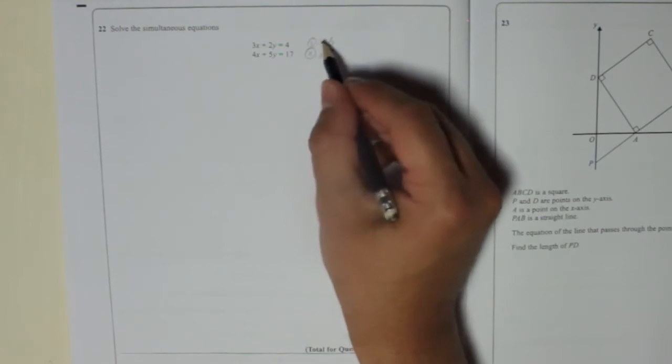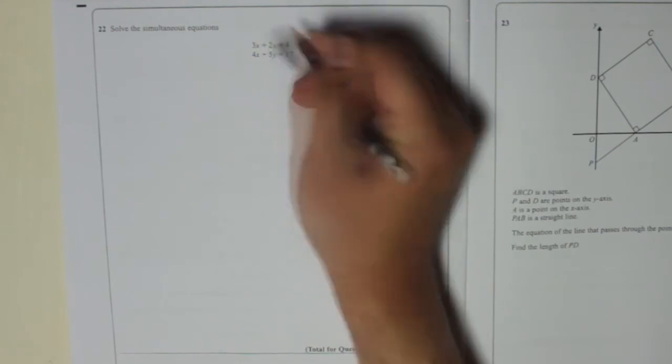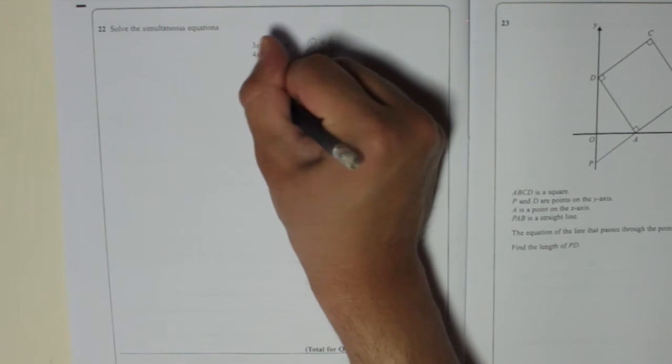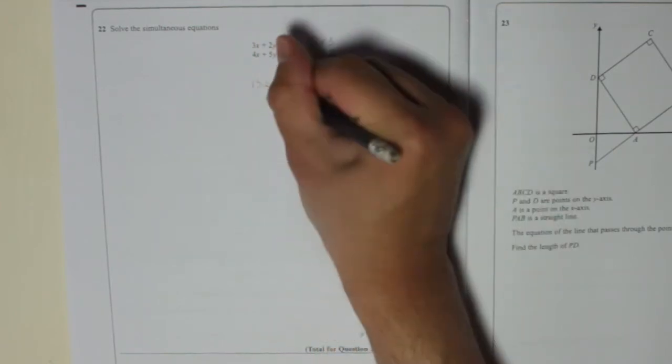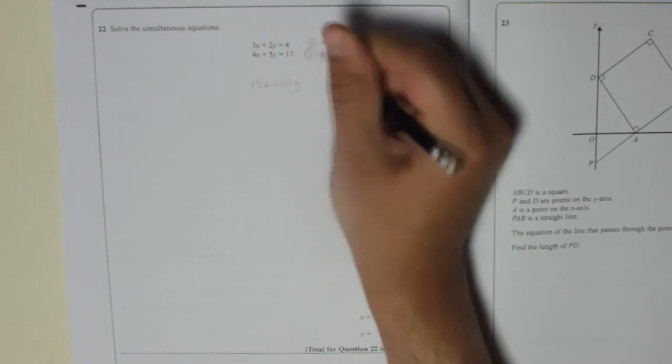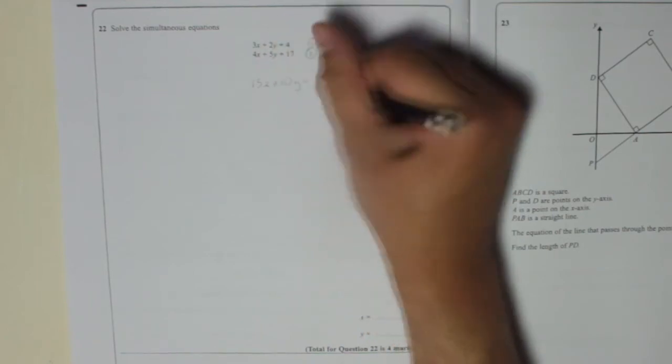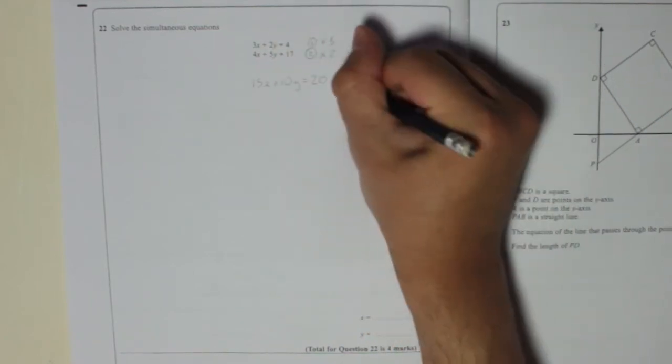So I'll do the first one. Number 1 times by 5. So 3x times by 5 is 15x. 2y times by 5 is 10y, which is what we wanted. And then 4 times by 5 is 20. And I'll call that line 3.